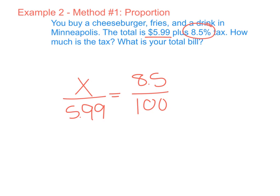When I do 8.5 times 5.99 divided by 100, I get x equals 0.50915. Now I have to decide how to round. We need to go to our nearest cent. So we're going to cut it off here between the 0 and the 9. And since this digit is a 5 or higher, we need to round up. So this is $0.51 for our tax.